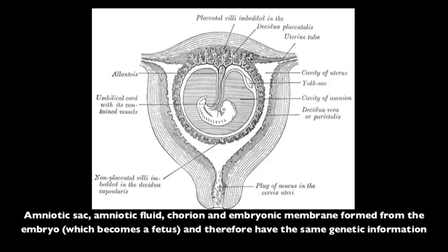During fetal development, the amniotic sac, amniotic fluid, chorion, and embryonic membrane have formed from the embryo and therefore have the same genetic information or DNA as the embryo. The embryo will ultimately develop into a fetus, and so these structures will share the same genetic information as the fetus.